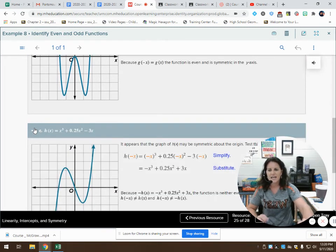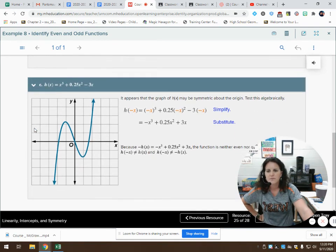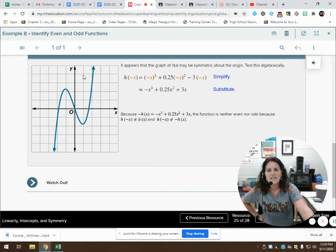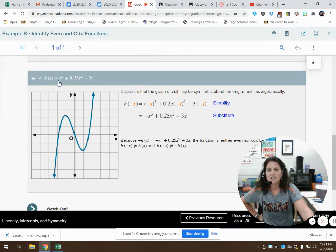And now, let's look at letter C. Hopefully, this is making a little bit more sense. It appears that the graph of h of x may be symmetric about the origin. Seems that way. If I was to rotate it, it should lay on top of itself. So, once again, let's test it algebraically. We do that by taking out this x and replacing it with a negative x. When I have a negative x cubed, that gives me out a negative number, because it's three times, so it's going to be a negative. When I square this, it's going to come out as a positive, so that stays the same. And then, I have minus three times a negative comes out as a positive.